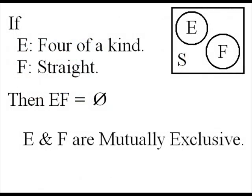Now, let's say E is four of a kind, and F is getting a straight. As you can see in the Venn diagram on the right, they really don't intersect. And intersecting them, you'd get a null event, which is that symbol with the zero crossed out. E and F, therefore, are mutually exclusive, which means when one happens, the other really can't happen.